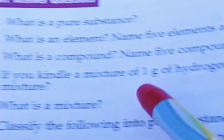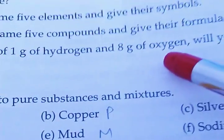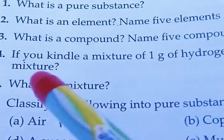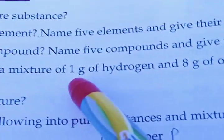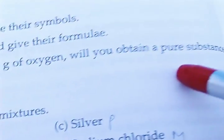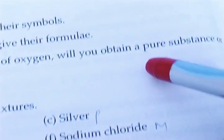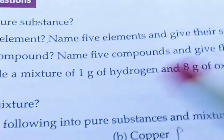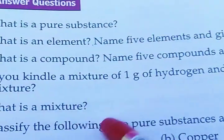If you create a mixture of 1 gram of hydrogen and 8 gram of oxygen, will you obtain a pure substance, a mixture? When we mix up 1 gram of hydrogen and 8 gram of oxygen, we will get a mixture that is 9 gram of water.